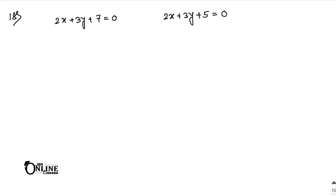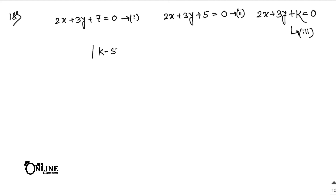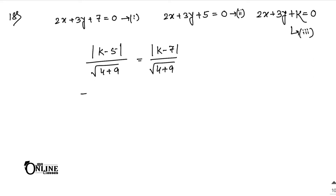The required line will be 2x plus 3y plus k = 0, which is parallel to both given lines. Call this equation 3. Since this line is midway, the distance between line 3 and line 2 equals the distance between line 3 and line 1. So |k minus 5| divided by root over (4 plus 9) equals |k minus 7| divided by root over (4 plus 9). The root terms cancel out, giving |k minus 5| = |k minus 7|.